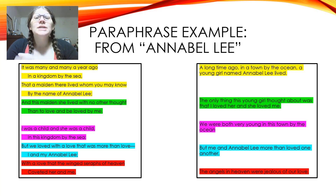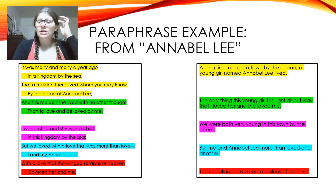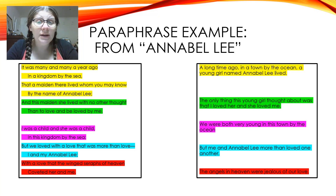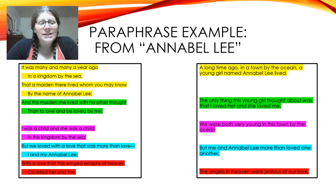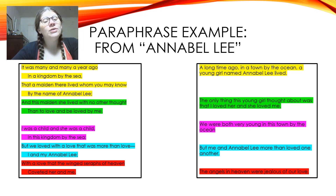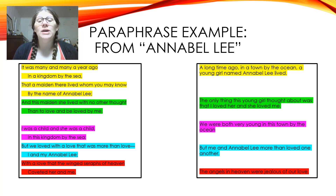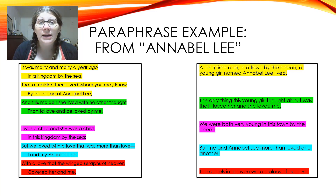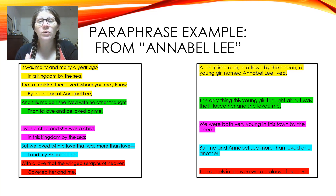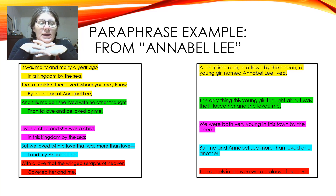Sometimes in older literature sentences are flip-flopped like that, so you could say 'Annabelle Lee — a girl you know by that name — lived in a town by the ocean a long time ago.' Moving on to the last part of the first stanza: 'And this maiden she lived with no other thought than to love and be loved by me.' My paraphrase: 'The only thing this young girl thought about was that I loved her and she loved me.' I'm not trying to interpret — just putting it in my own words. Interpretation comes later, believe me.